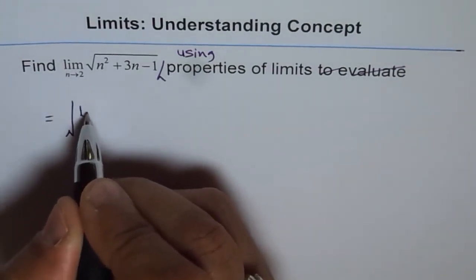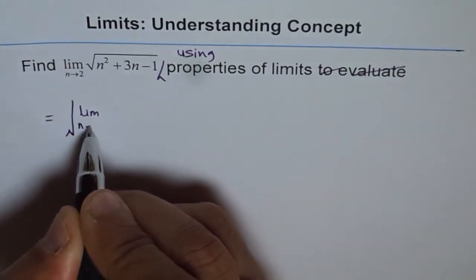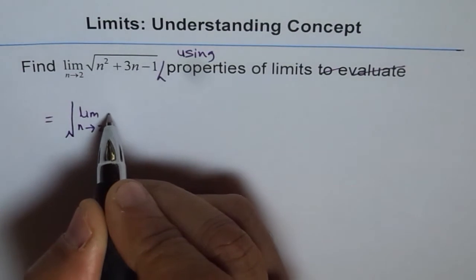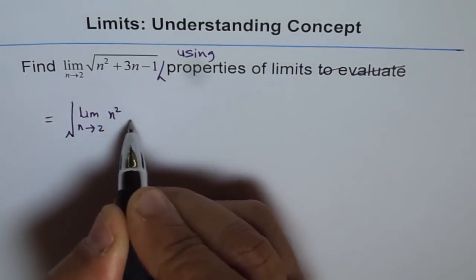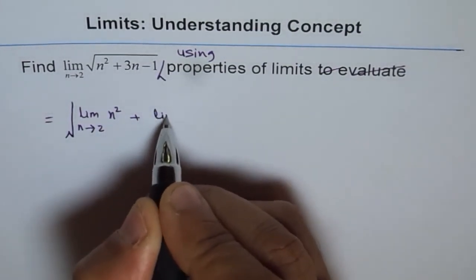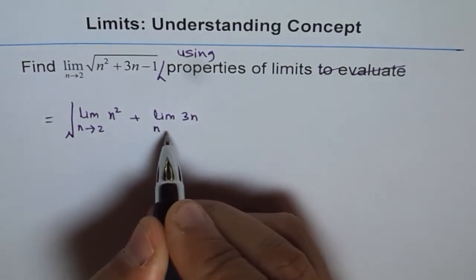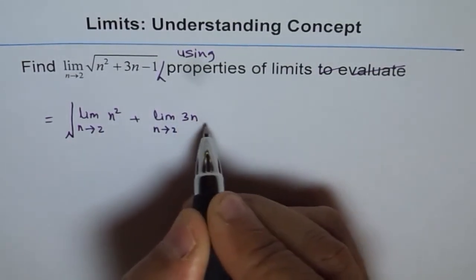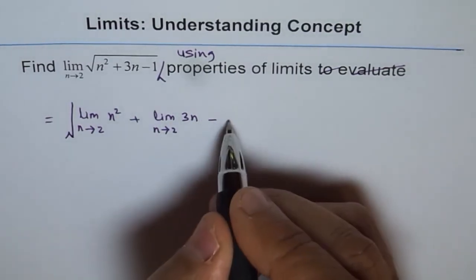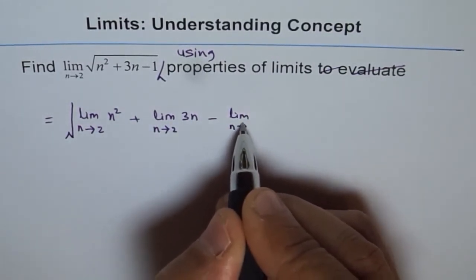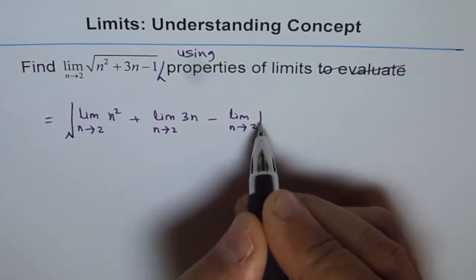limit of n squared as n approaches 2, plus limit of 3n when n approaches 2, minus limit of 1 when n approaches 2.